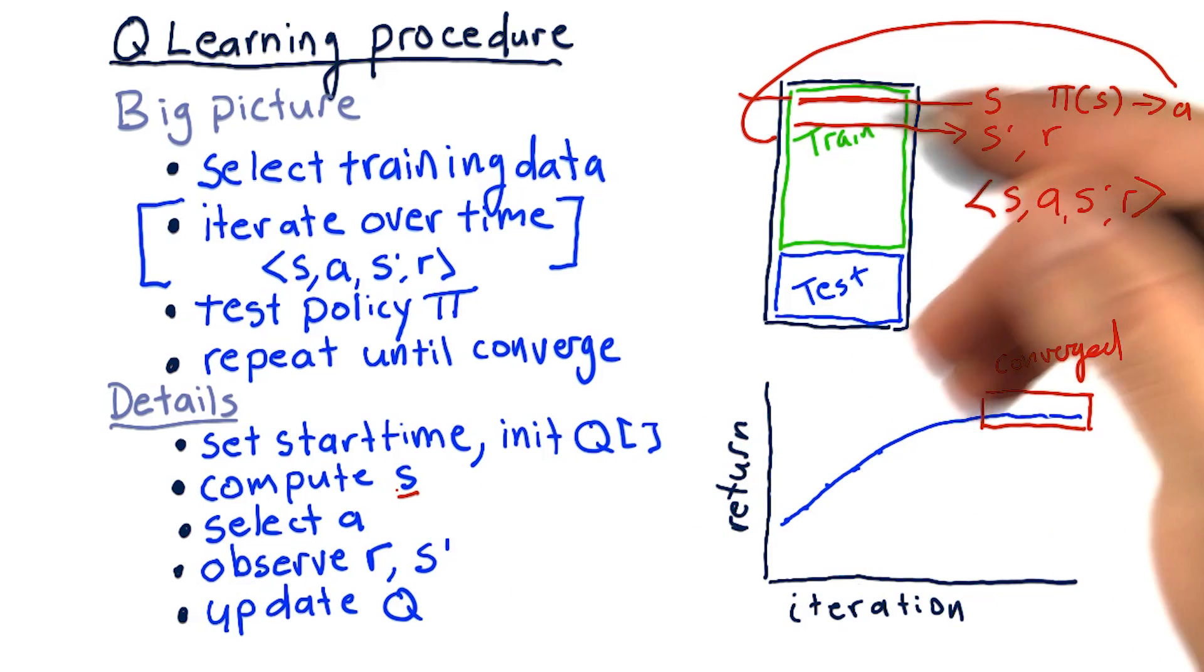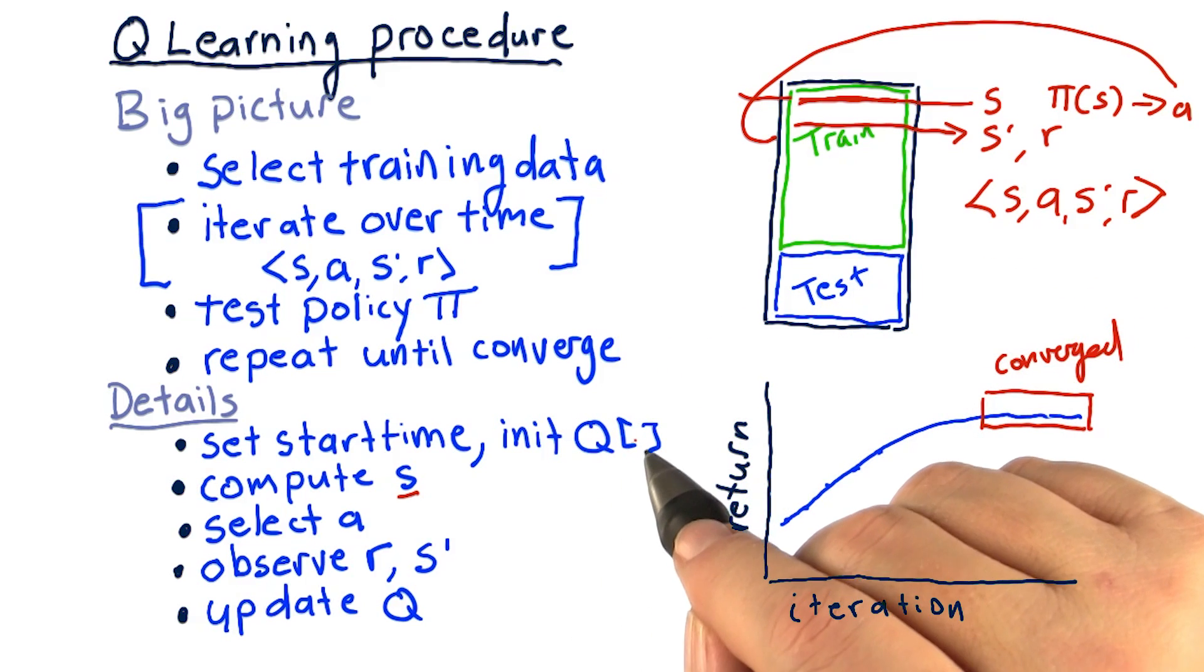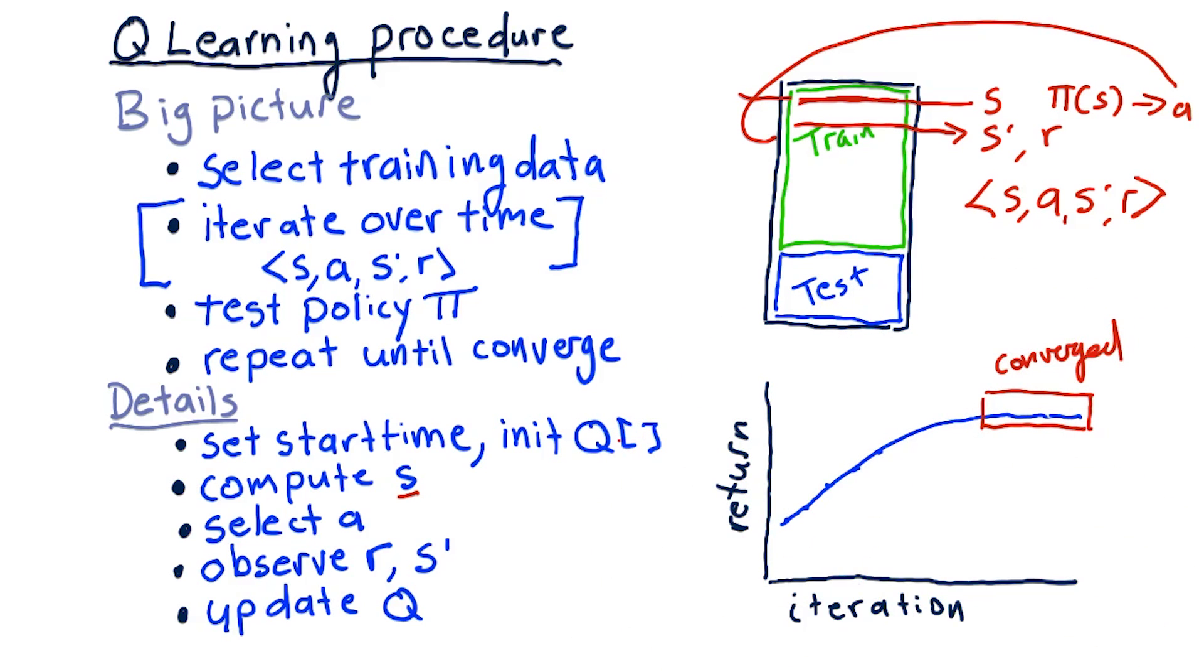We consult our policy, or in other words, we consult Q to find the best action in the current state. That gives us A.